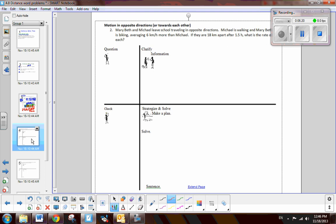Now, our next example is, what happens if we've got motion going on, but it's the opposite direction? Or, possibly, they're going toward each other. So, in this example, I have Mary Beth and Michael are leaving school, traveling in the opposite directions. So, here's school, and they're going in opposite directions. So, we can just get a feel for what's going on. Michael is walking, and Mary Beth is biking, averaging 6 kilometers more per hour. If they're 18 kilometers apart, after an hour and a half, what is the rate of each? First things first, look at the question. I need to find the rates for Mary Beth and Michael.